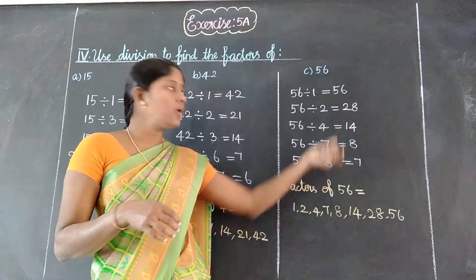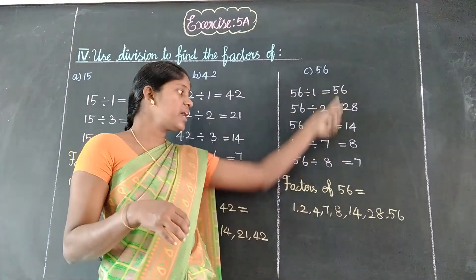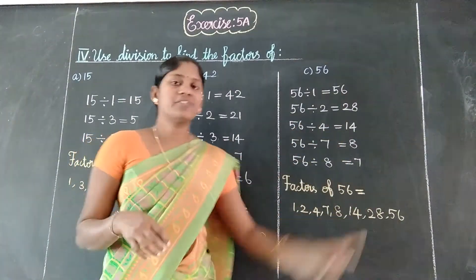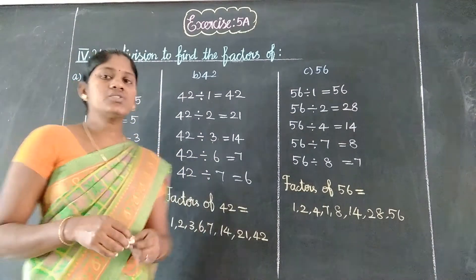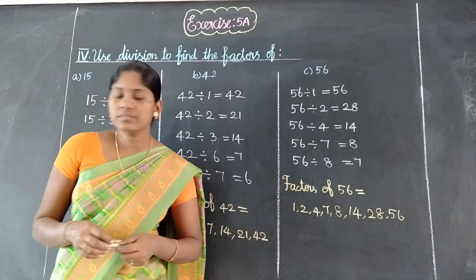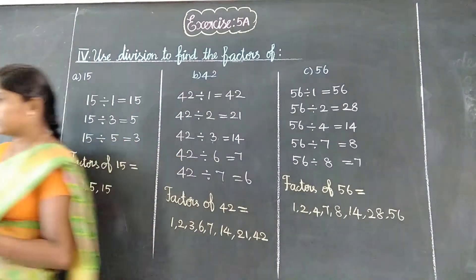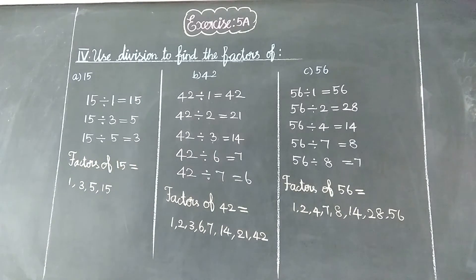So, division sum we can do it for 56. We can find the factors. That's the fact — we can write it. Thank you, friends.